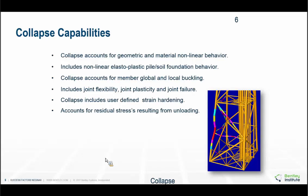Collapse also accounts for the non-linear elastoplastic pile foundation behavior, global and local buckling, joint flexibility, joint plasticity, and joint failure. Users can define their own strain hardening curves. In the past we used to have a bilinear curve, but right now you can define any sort of yield curve by using semi-linear lines.